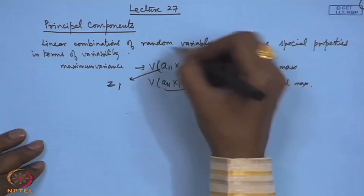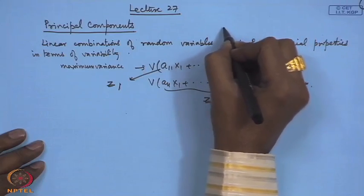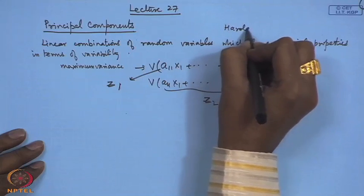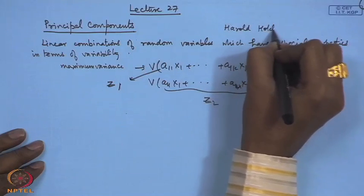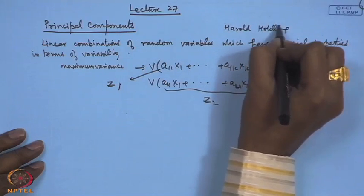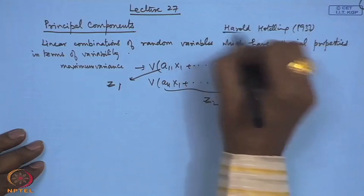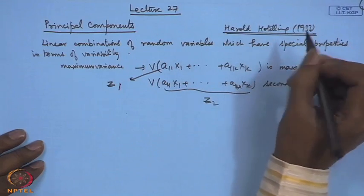This is, in a nutshell, the problem of principal component analysis. Now let us develop the mathematical procedure. The procedures for finding principal components were originally discussed by Harold Hotelling, an American statistician, around the year 1933.